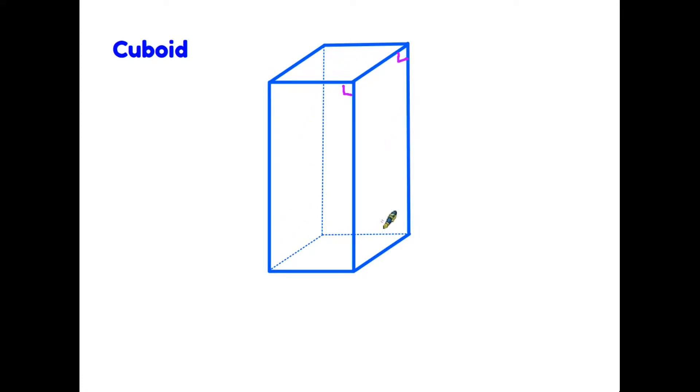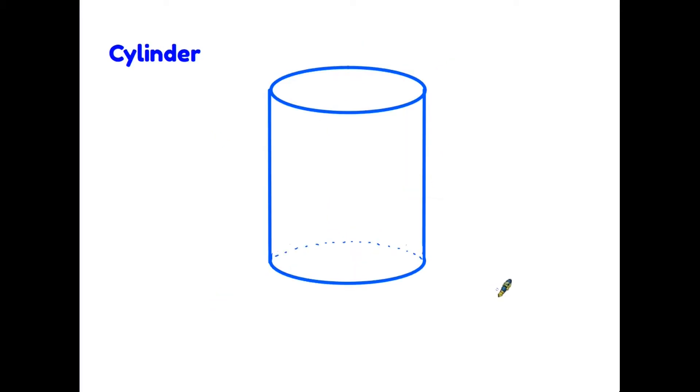So a cuboid is made up of a combination of squares and rectangles, and the opposite sides are the same. So the top is the same as the bottom, this right hand side would be the same as the left, and the front would be the same as the back.